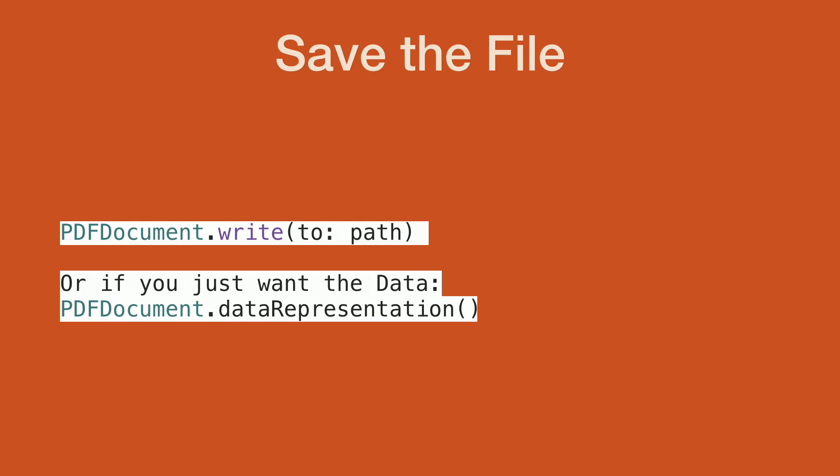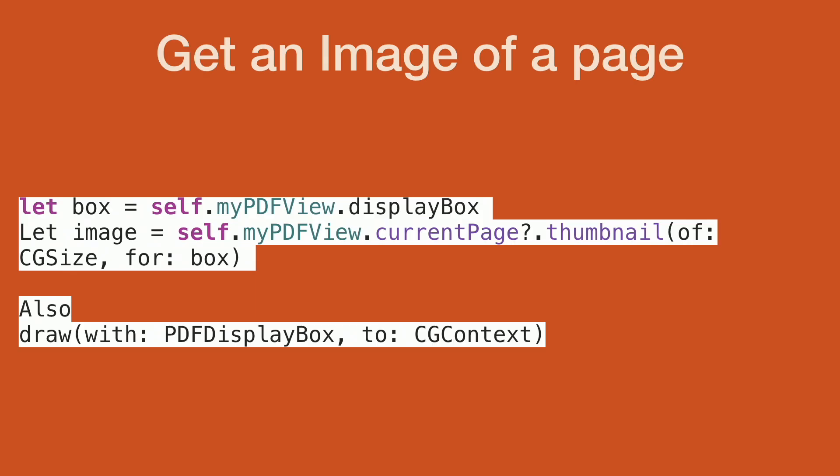To save the ticket, you can simply call PDFDocument write to path, which dumps it out to disk. Or you can get a data representation version if you're going to send it up to a web service. You can also get a UIImage of the page — the reverse of creating a page from a UIImage — using the displayBox to specify the region you want. And if you're doing more custom drawing, you can dump the page out to a CG context.